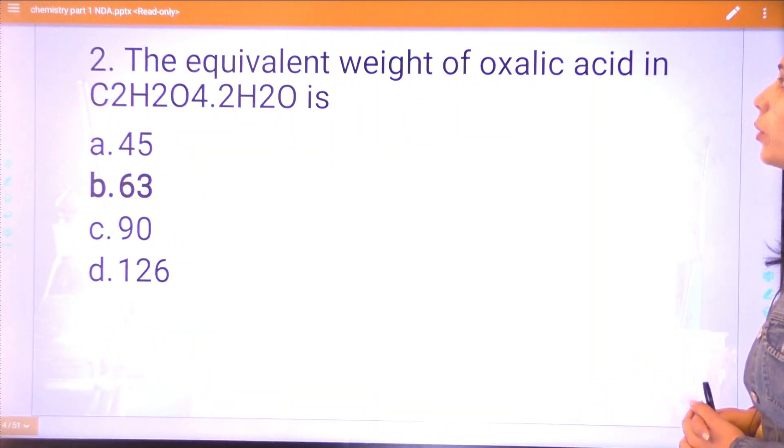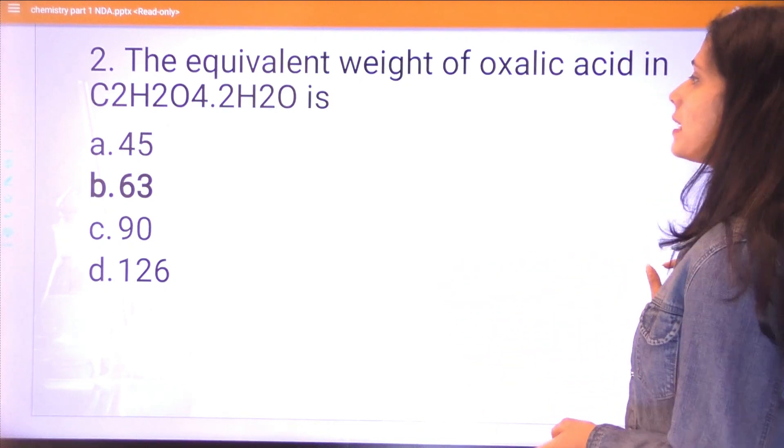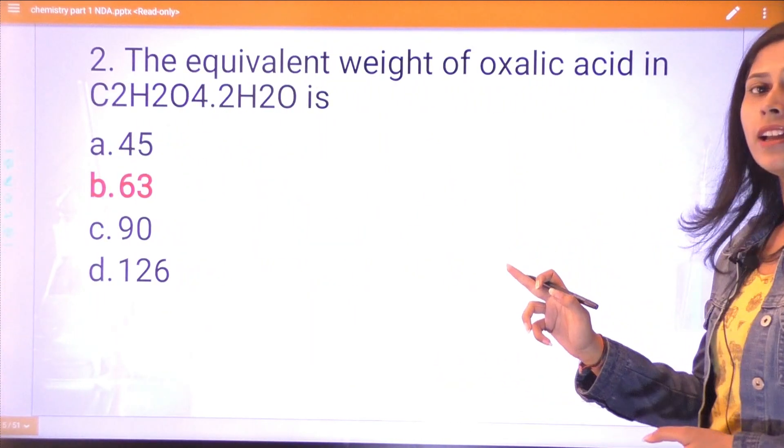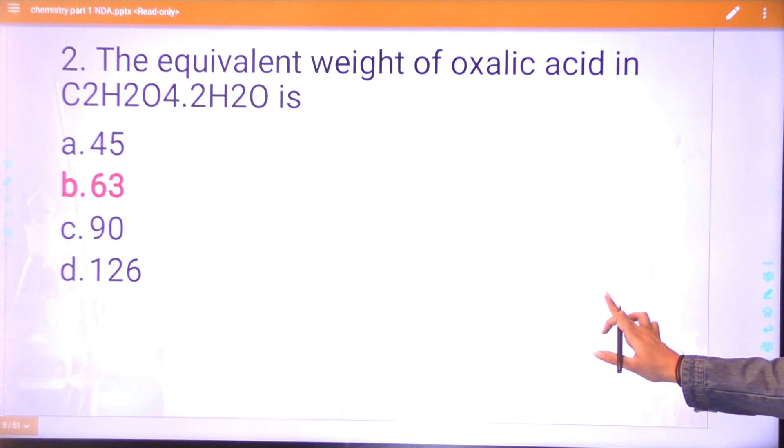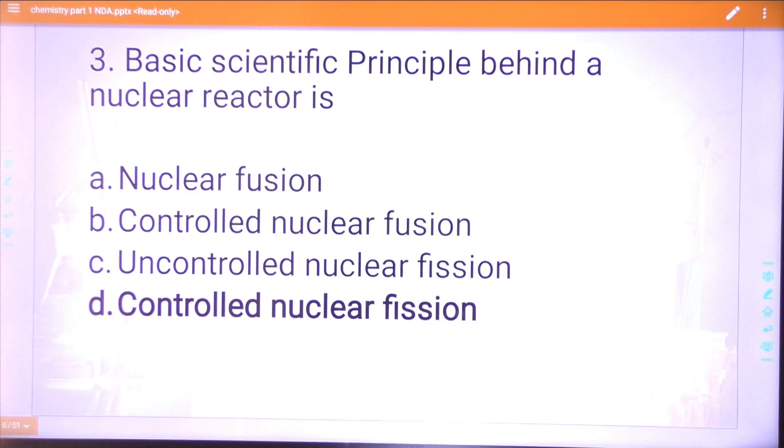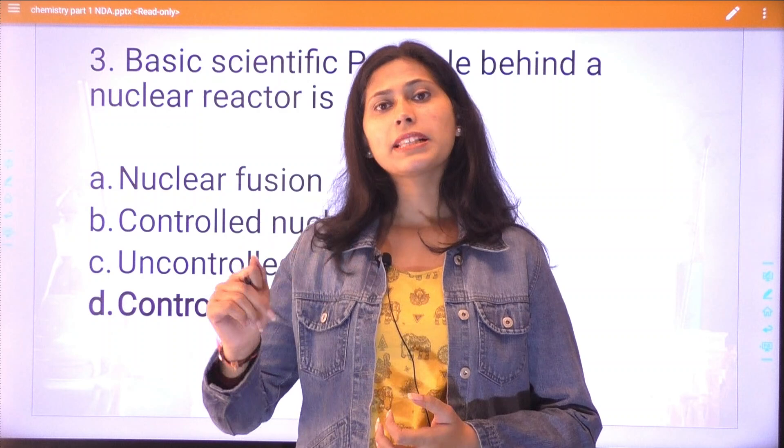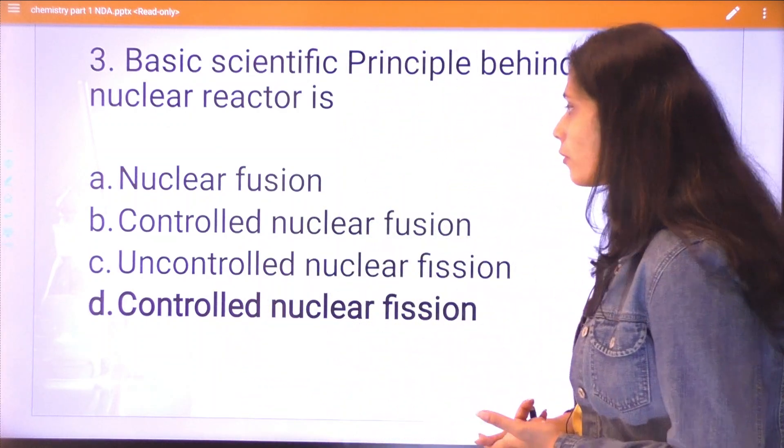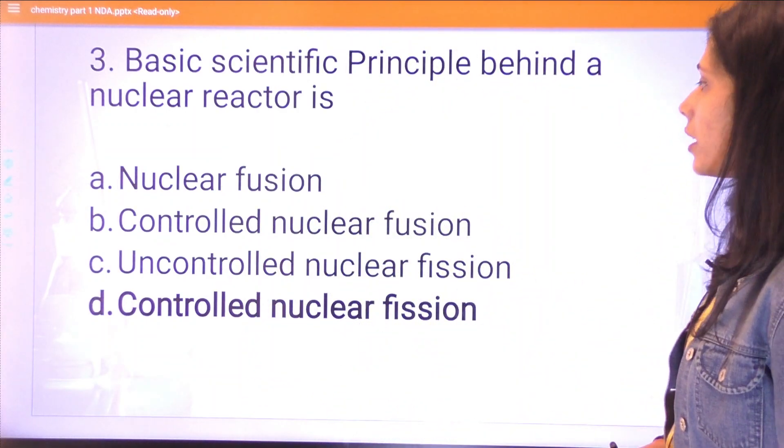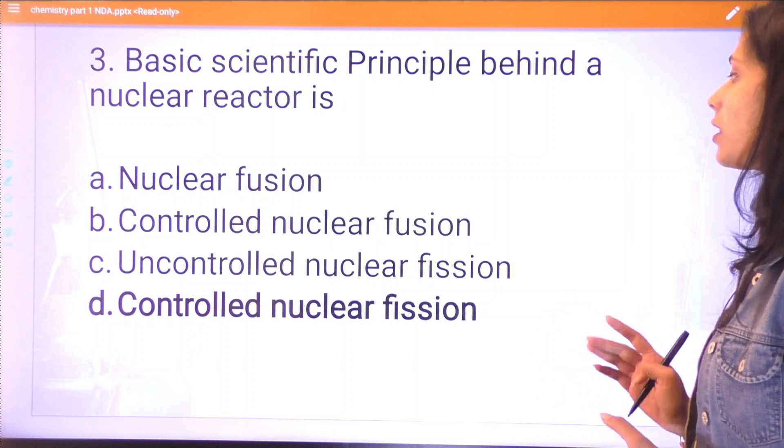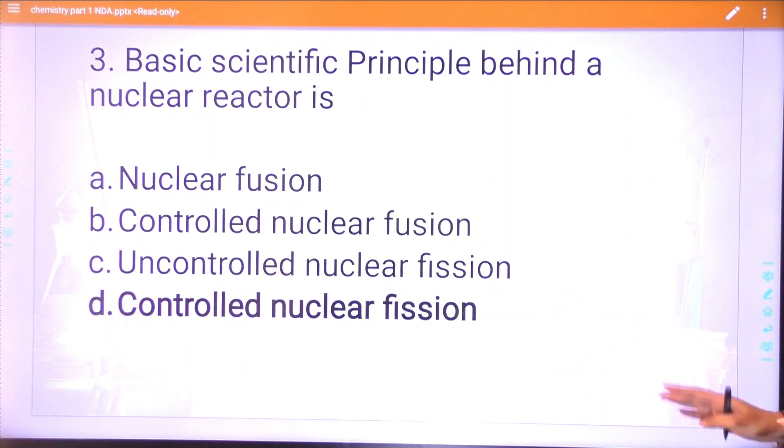Question number two: the equivalent weight of oxalic acid C2H2O4. The correct answer is 63. Question three: the basic scientific principle behind a nuclear reactor is controlled nuclear fission.